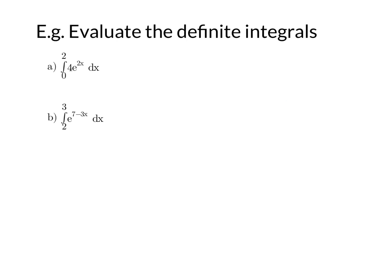Now let's evaluate some definite integrals. So we're going to go 0 to 2 of 4e to the 2x, and 2 to 3 of e to the 7 minus 3x.